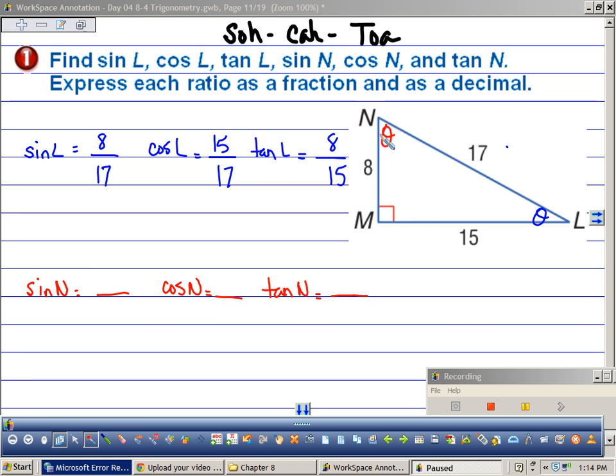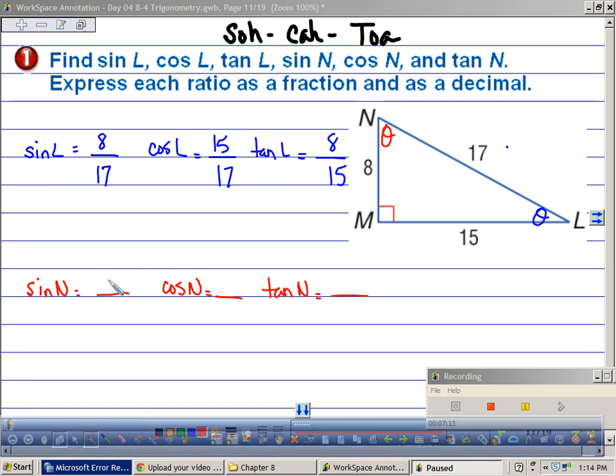Let's do the sine of N. So the sine of N, sine means soa. So that's opposite, which is what? What's the opposite? No, of N? 15. 15 over hypotenuse. Cosine is ca. What would that be? 8 over 17. And tangent is toa. What would that be? Opposite over adjacent. 15 over 8.